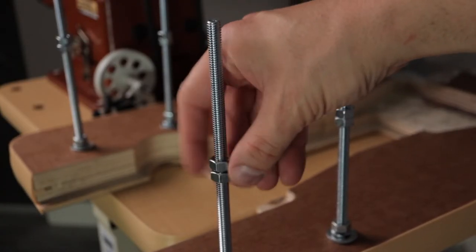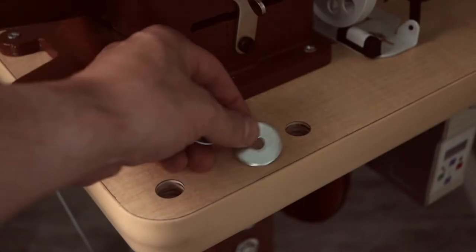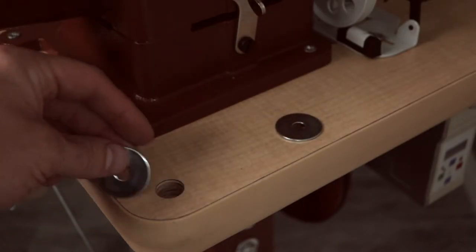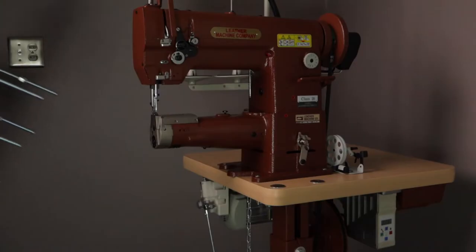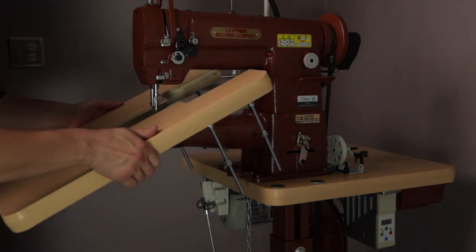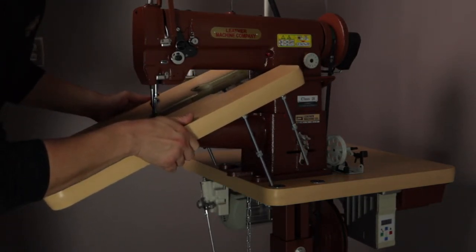Then add two more nuts halfway down. Place four large washers over each hole on the table. Insert the work platform around the machine cylinder arm and insert all four rods through the table holes.